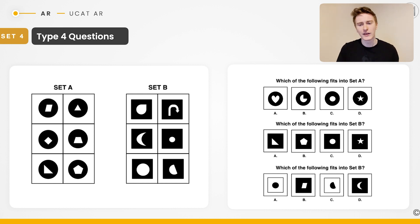If we then look at the questions, which of the following fits into set A? Well, it'll be the one with the black circle and a straight edged inner shape. In other words, that's D.